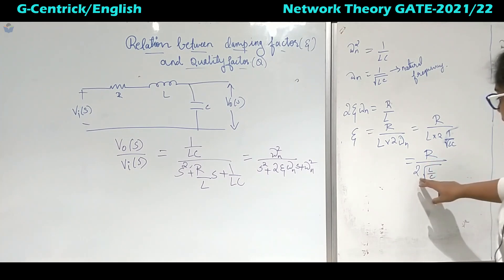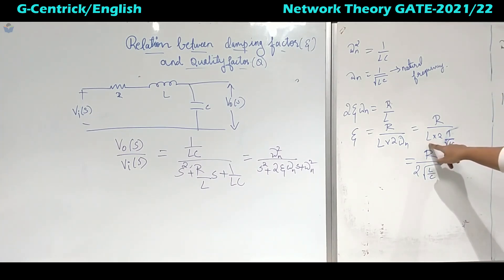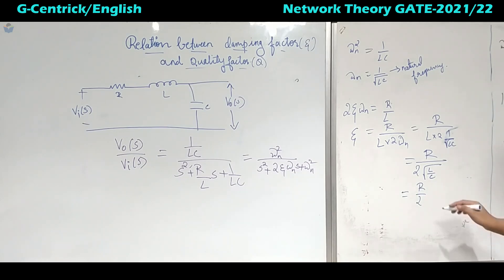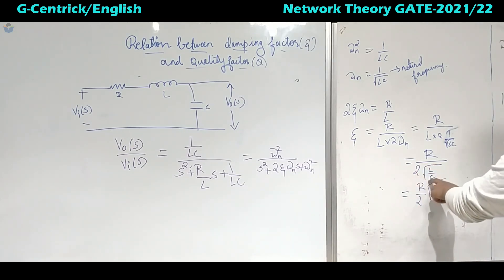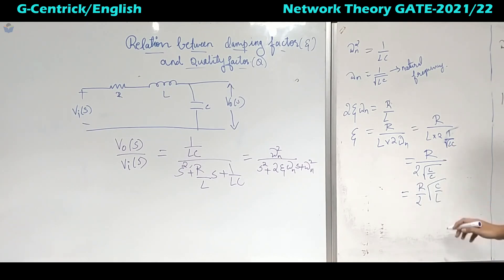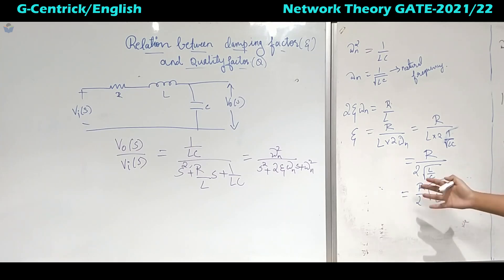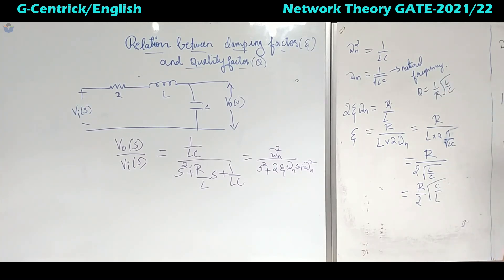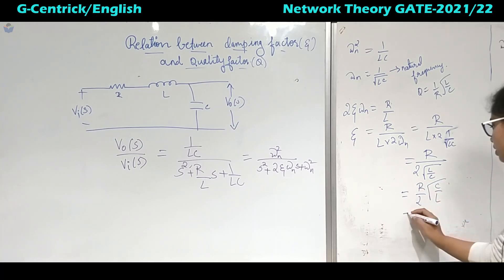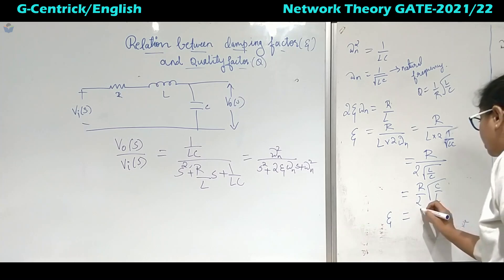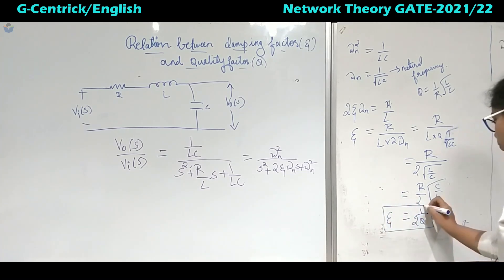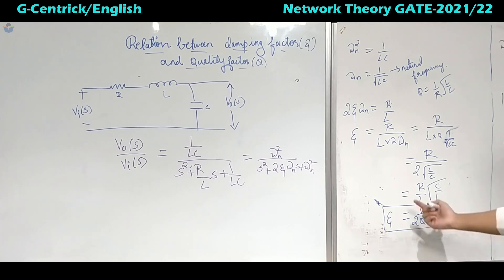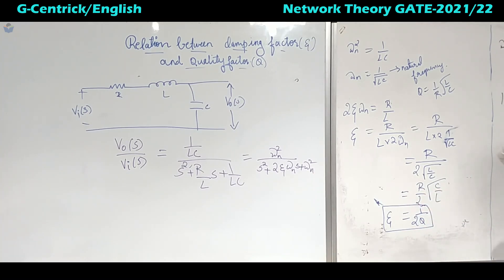Simplifying, zeta equals R/2 times under root of C/L. We can see this is something like the inverse of the quality factor, since the quality factor is 1/R times root(L/C). Everything is in the opposite direction. So we can write zeta equals 1 upon 2Q. This is the important relation: zeta equals 1 over 2 times the quality factor.